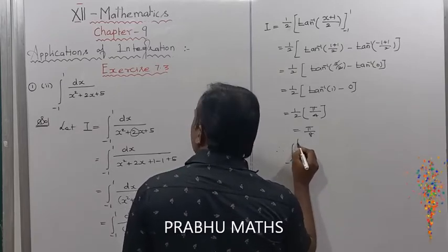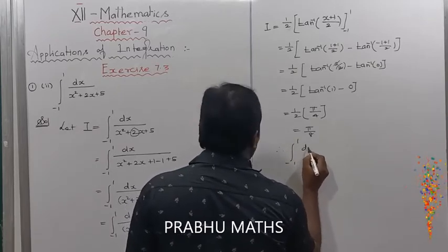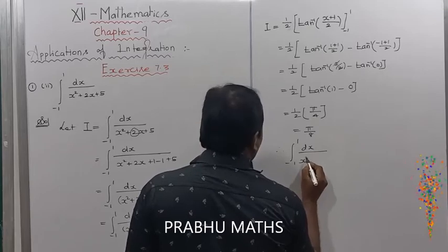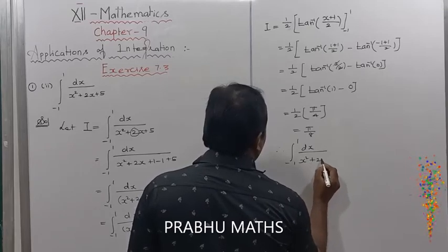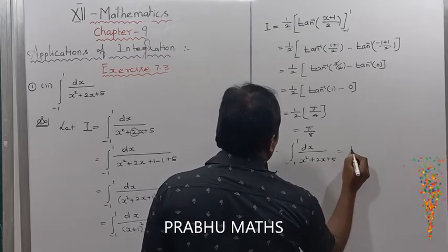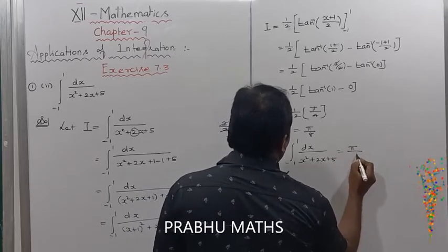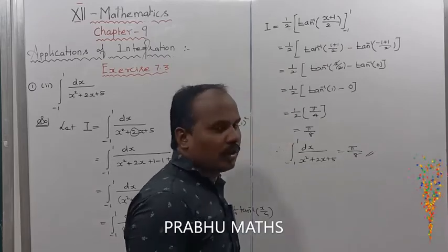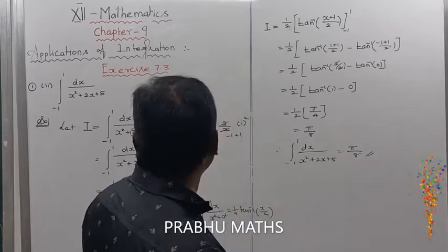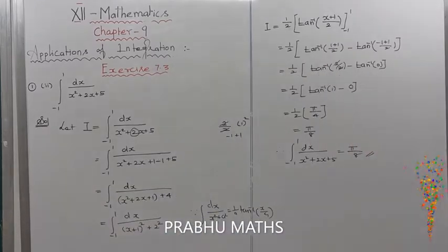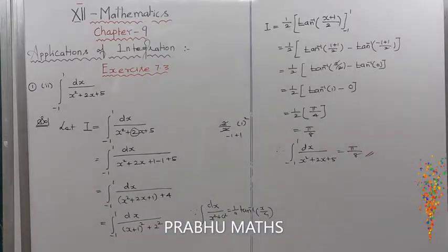Therefore, the integral from minus 1 to plus 1 of dx divided by (x squared plus 2x plus 5) is equal to pi by 8. We get the solution of the second subdivision.